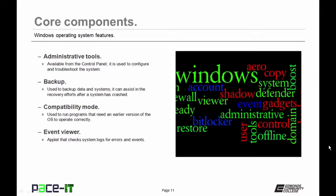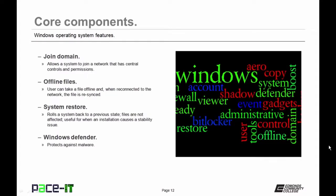There's compatibility mode — especially in Vista, Windows 7, and Windows 8 — sometimes they have difficulty running programs developed for Windows XP, and you can run those in compatibility mode. All versions have an Event Viewer so you can check system logs for errors and events. Some versions allow you to join domains, which offers much better networking than workgroups.